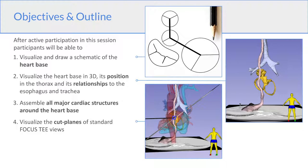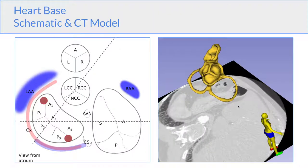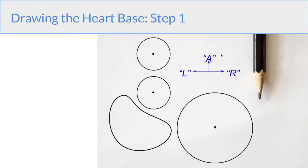So you'll be able to visualize in the patient's chest where the heart base would be and where all your echocardiographic windows and key structures are. And at the end, we'll focus on some of the key cut planes and focus TEE views. So on the left here, we have the schematic of the heart base that we will end up with. And on the right, the 3D model of the same structure. I would highly recommend you draw along with me.